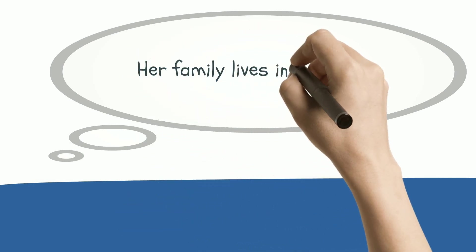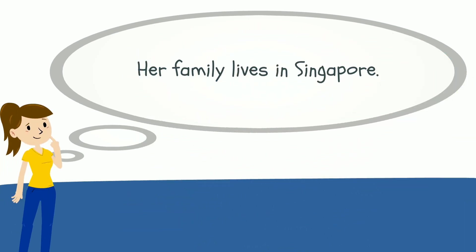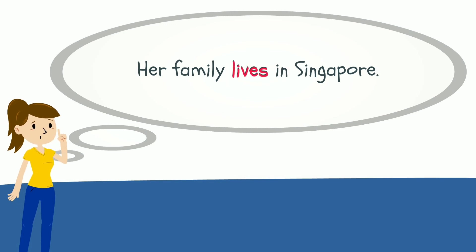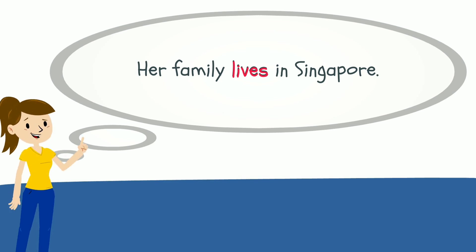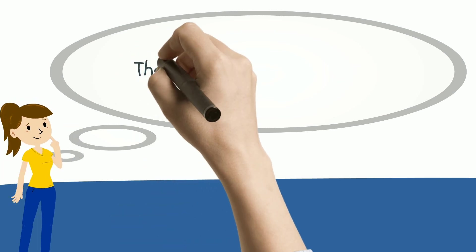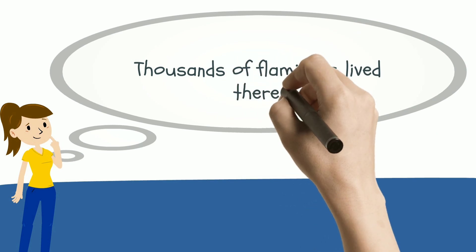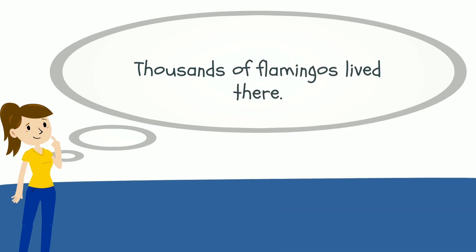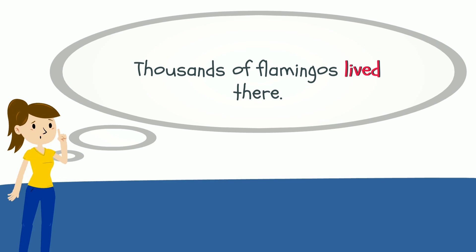Now it's time to check your understanding. "Her family lives in Singapore." Where is the verb in this sentence? Lives. And what is the tense of this verb? Is it past, present, or future? Present. "Thousands of flamingos lived there." Where is the verb in this sentence? Lived. And what is the tense of this verb? It ends in -ED. Past.